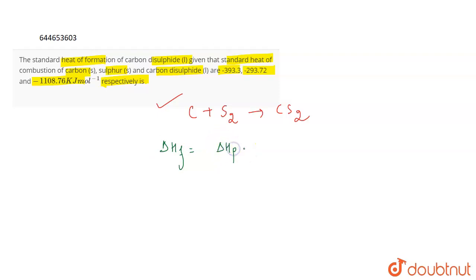You are given the enthalpy of combustion of the products and also you are given the enthalpy of combustion of reactants. So if we subtract that, we can get the delta H formation, which means the enthalpy of formation of carbon disulfide.